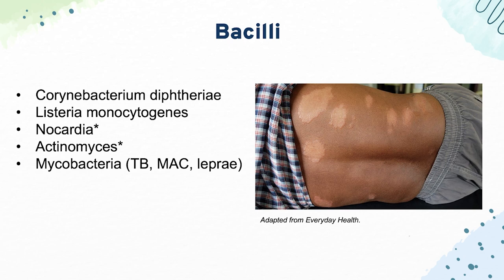Next, we have Listeria monocytogenes, which is known for causing meningitis in neonates, in the immunocompromised, and also infecting pregnant women. Next, we have Nocardia and Actinomyces, which cause pulmonary infections in immunocompromised patients. Actinomyces often causes oral abscesses identified on exam by yellow sulfur granules. Both Nocardia and Actinomyces are branching, which is why they have asterisks next to them.